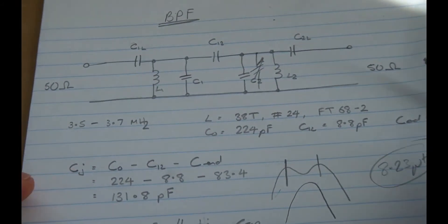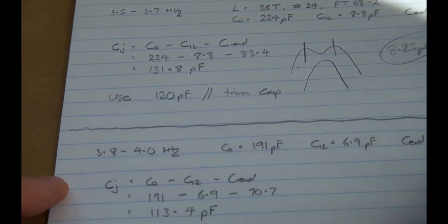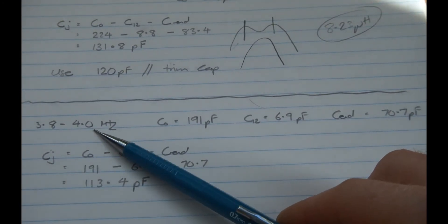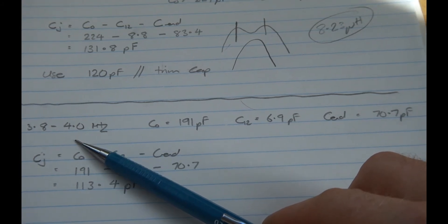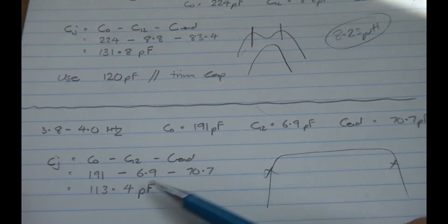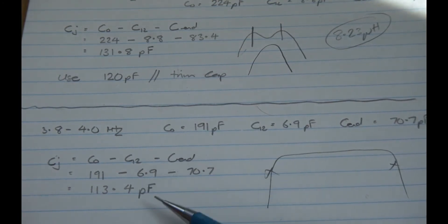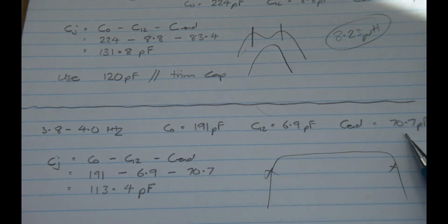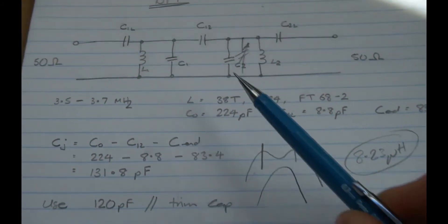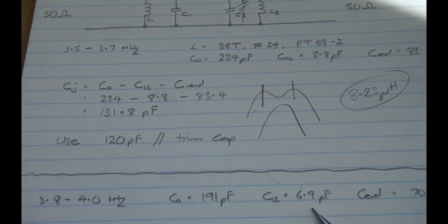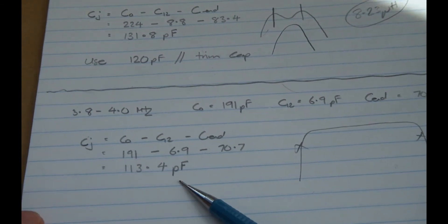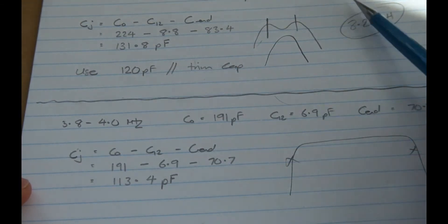What we'll do now is, just for interest sake, I also looked at the values that would give you supposedly a 3.8 to 4 MHz range, or the 3 dB points on the passband. In that particular case, it comes out to be exactly the same inductor. The end capacitance is 70.7. The capacitor that links the two together works out to be 6.9. And then C1 and C2 are 113.4 picofarads. So it's all sort of roughly in the ballpark.